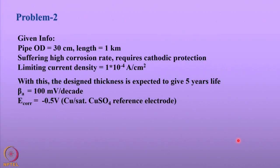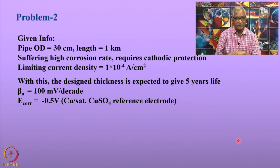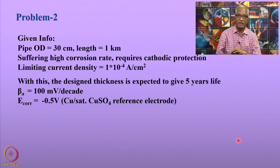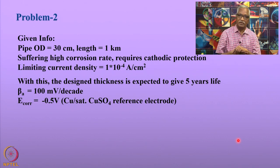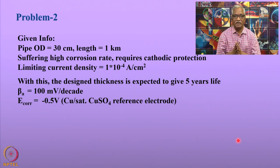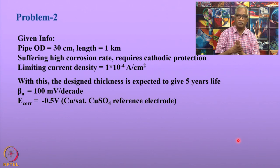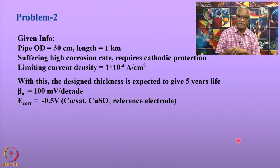Let us go on to the next problem. This problem deals with a pipeline that suffers from diffusion-limiting current density — diffusion-controlled corrosion — especially when oxygen reduction reaction is the predominant cathodic reaction. This happens when pipelines are in slightly neutral or relatively alkaline soil conditions.